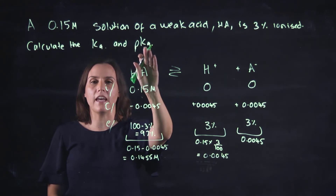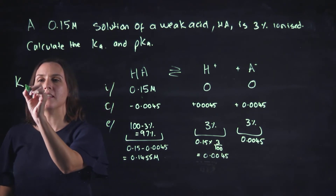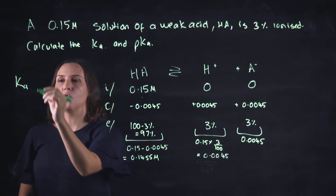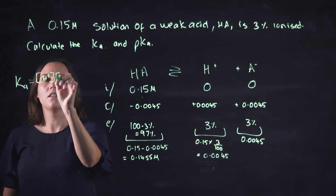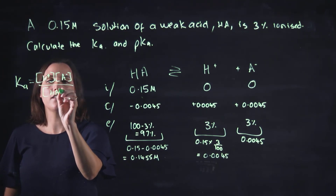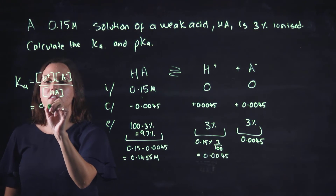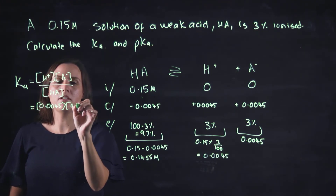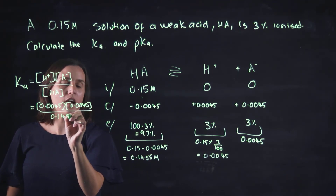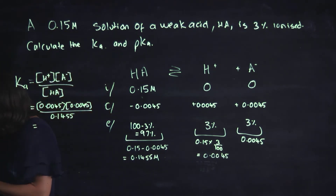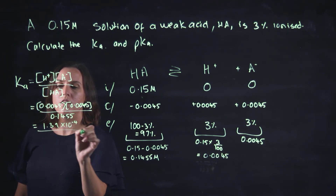Now we're asked to work out Ka and pKa. The equilibrium expression for this weak acid is Ka equals products over reactants: Ka = [H⁺][A⁻] / [HA]. Putting in the values, that's 0.0045 divided by 0.1455, and you get 1.39 × 10⁻⁴. That's the Ka value.